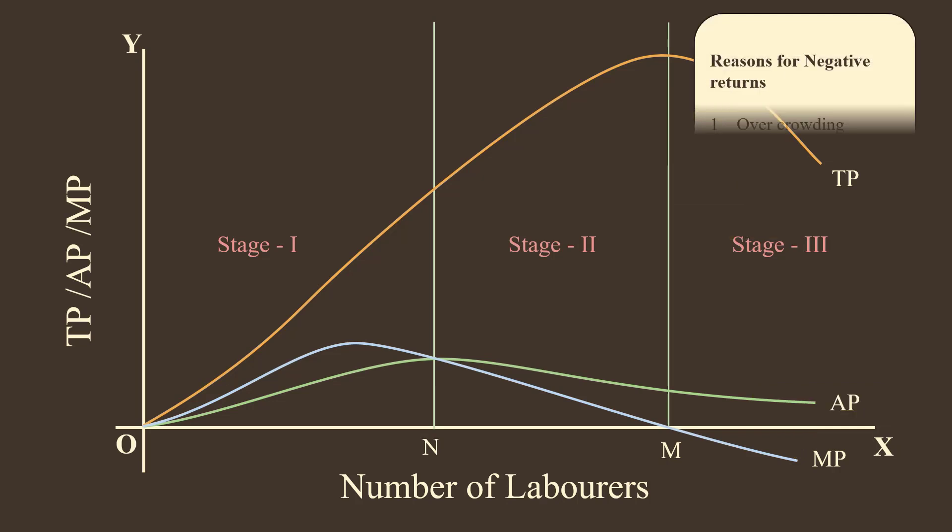Reasons for Negative Returns: 1. Overcrowding of Factors. Overcrowding occurs when more than required number of labor rights are employed. 2. Mismanagement. When labor rights are employed indiscriminately, management becomes exceedingly difficult. Due to above said reasons, negative returns show its ugly head after a certain point.